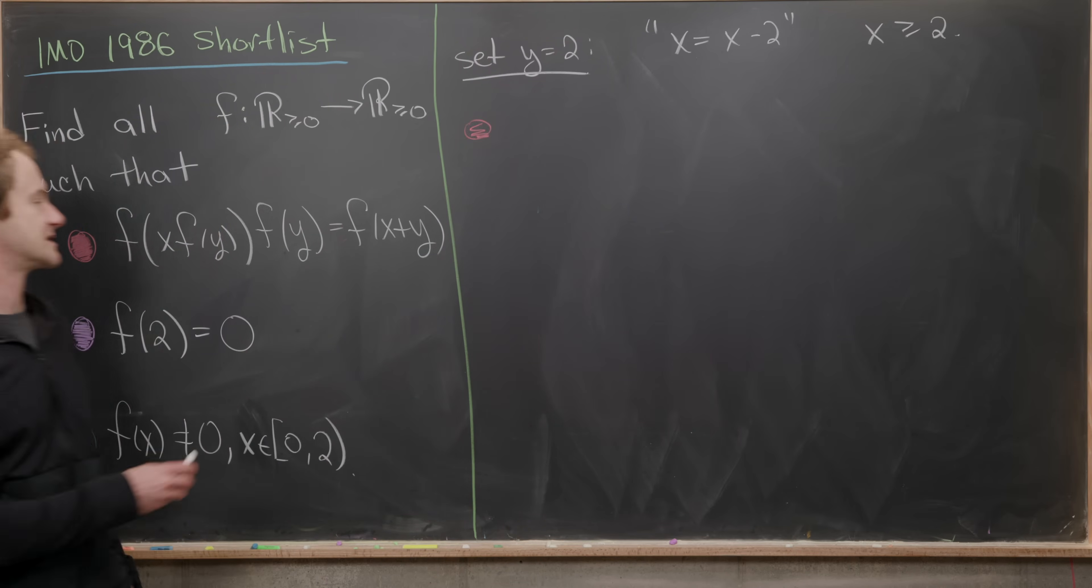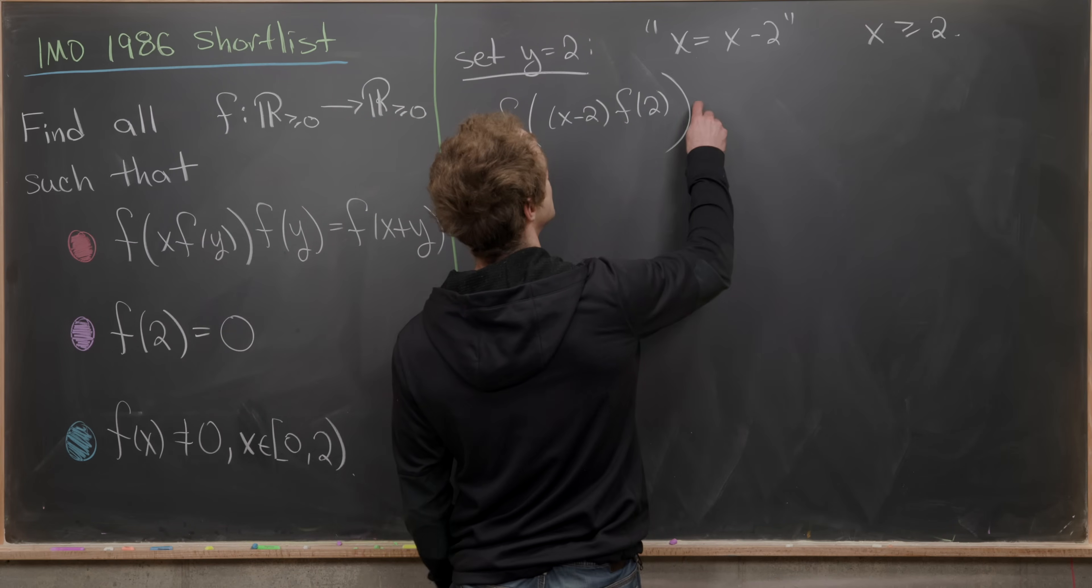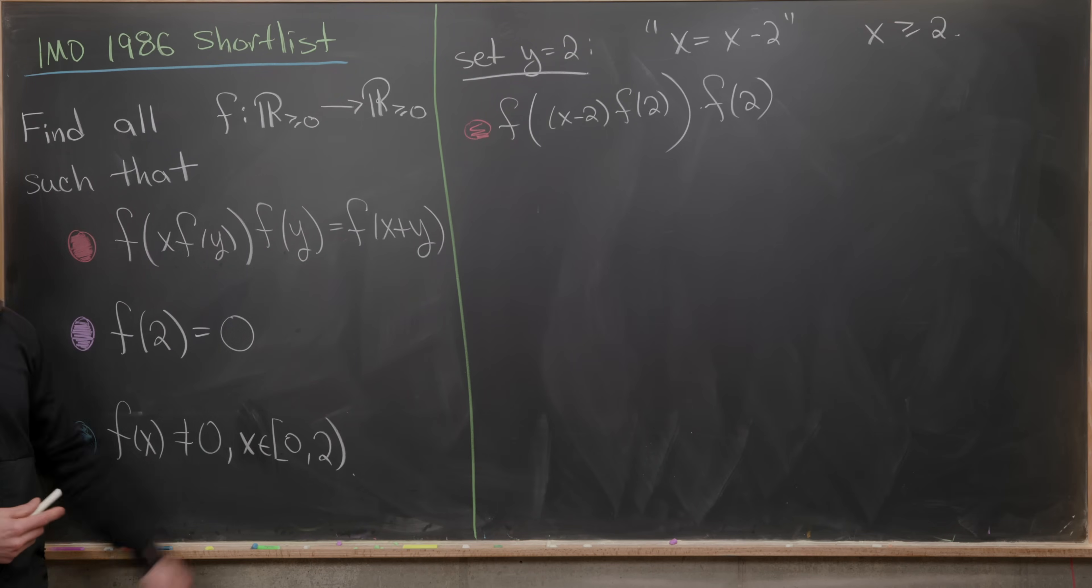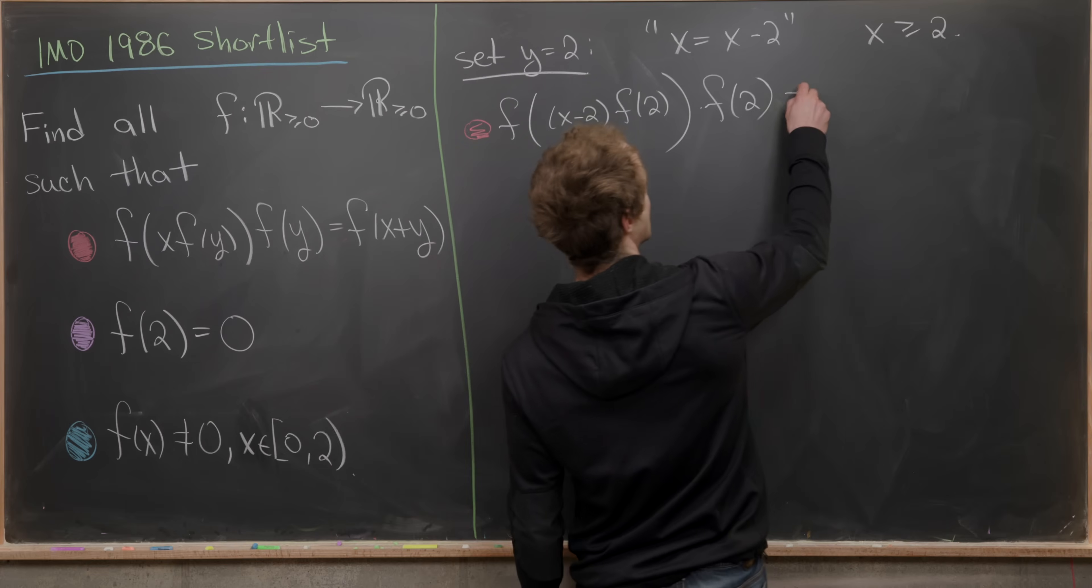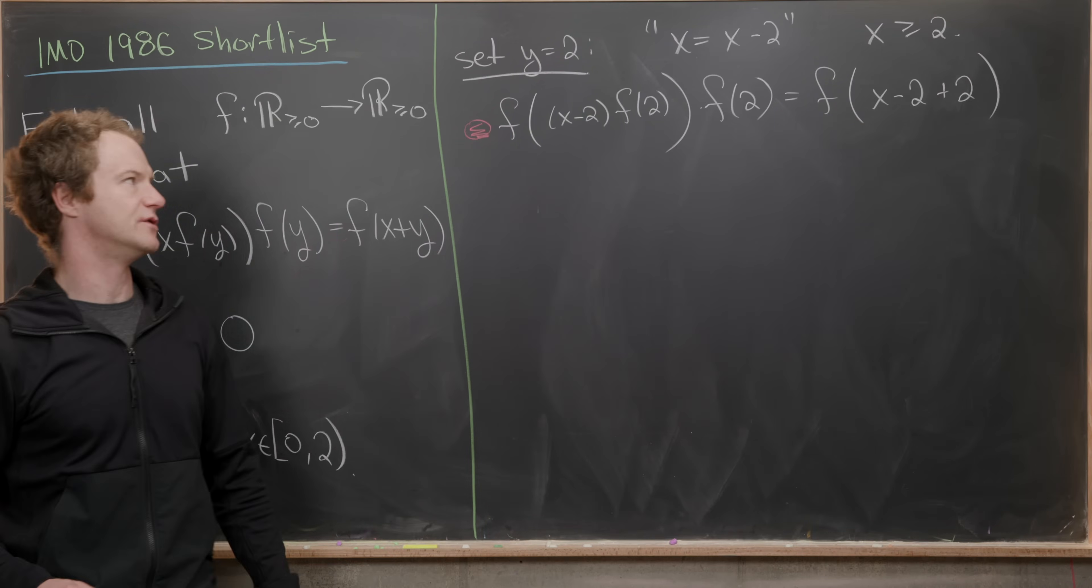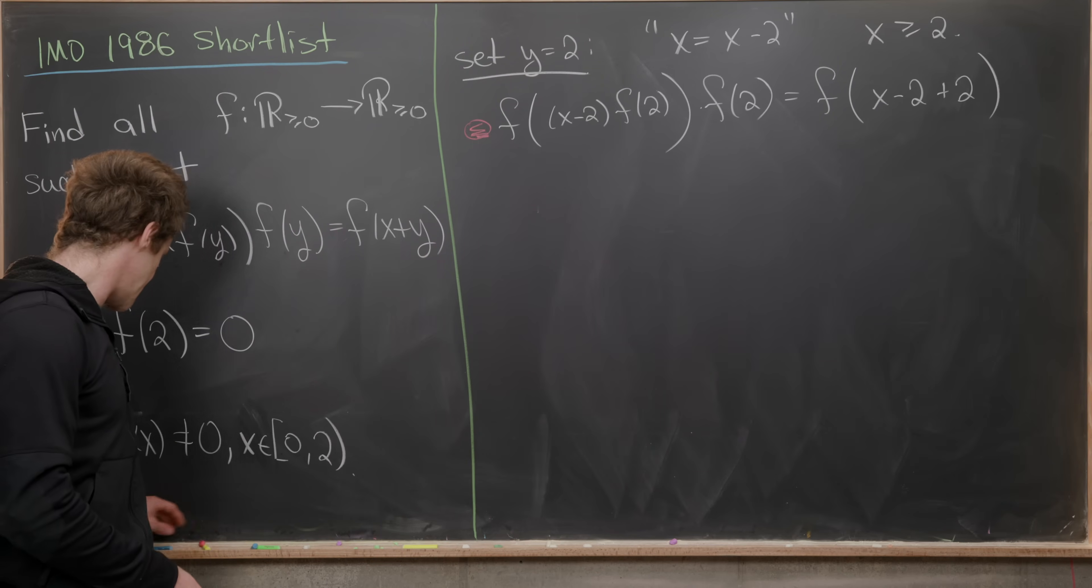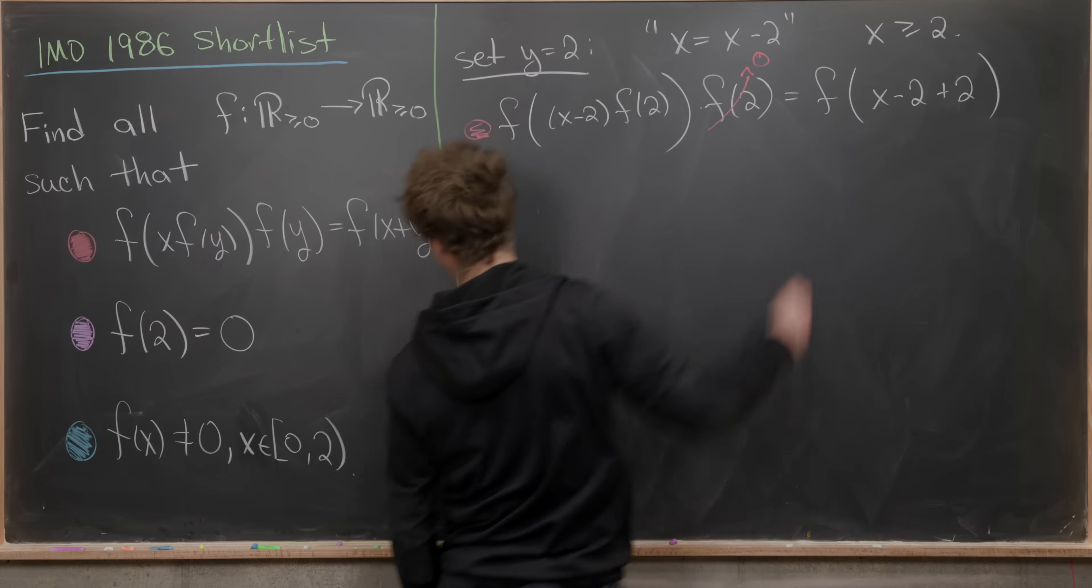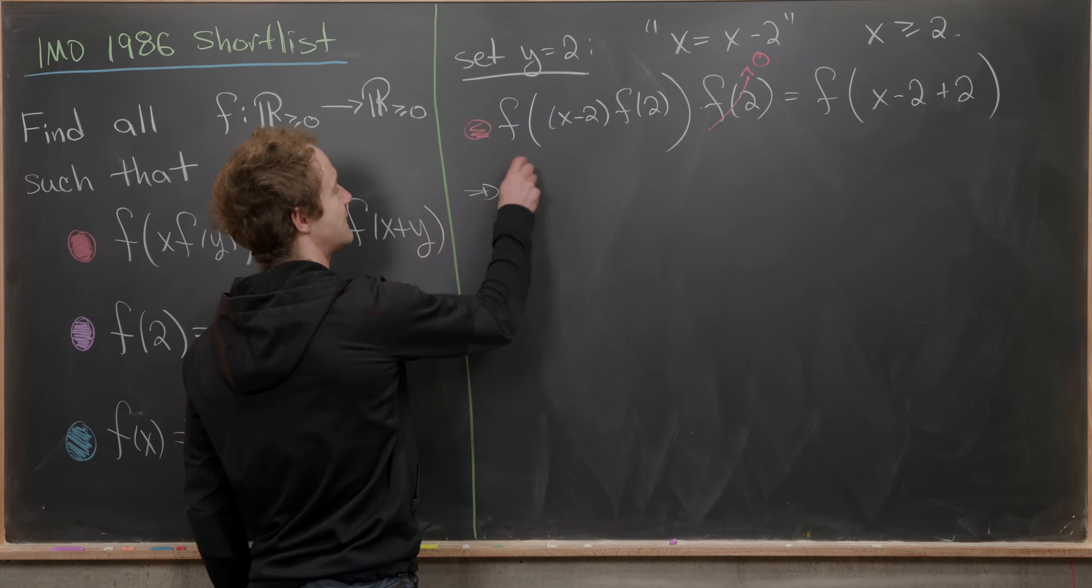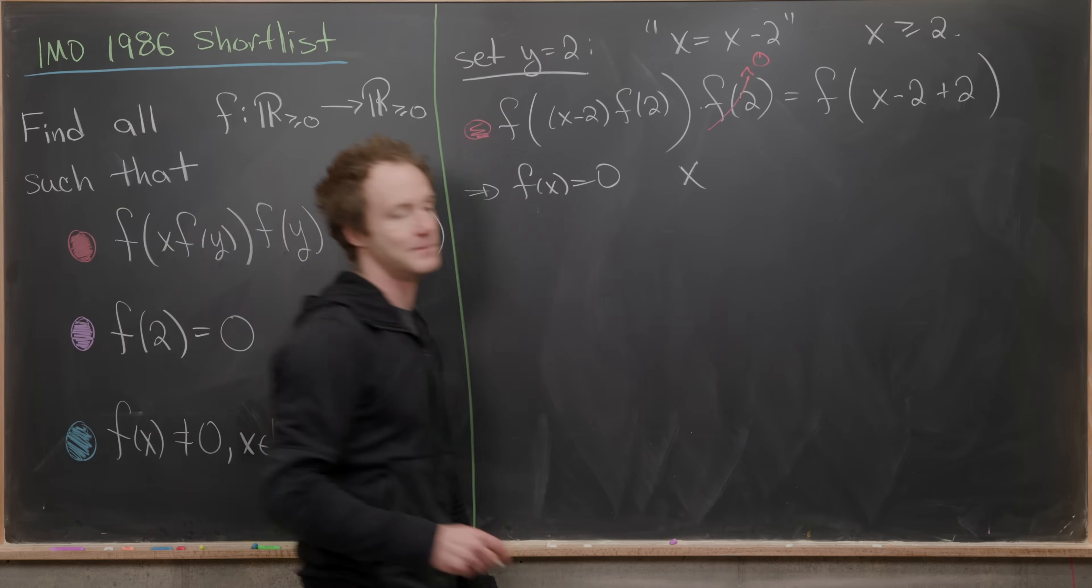Let's see what this red dot condition becomes under these substitutions. Over here on the left hand side, we have f(x-2) times f(2). So that's what we've got from here and here because we set y equal to 2. Then over there on the right hand side, we have f evaluated at x-2+2. Because we've substituted x for x-2 and then y for 2. But next up, we can see that this f(2) is equal to 0 by the purple condition.